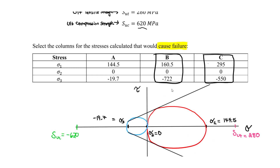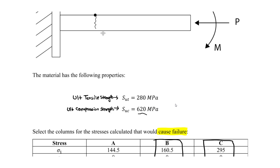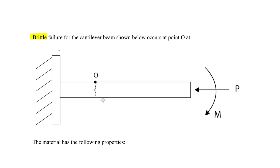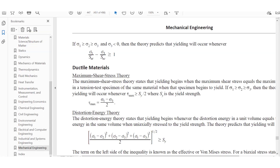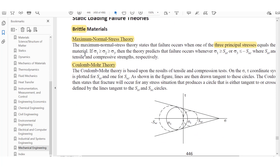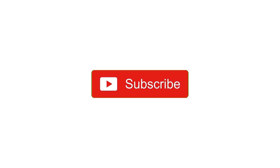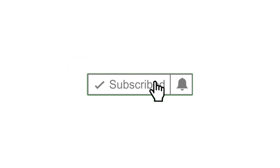Our final answer is columns B and C — these are the principal stress conditions that cause brittle failure. Both the maximum normal stress theory and the Coulomb-Mohr theory confirm this result. That's all for this question — please subscribe and like, and take care.